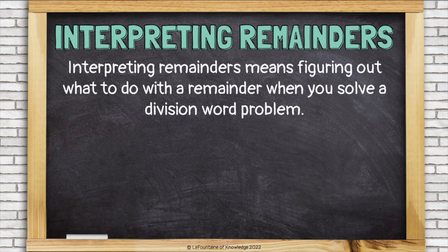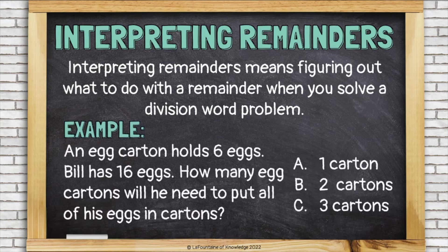Interpreting remainders means figuring out what to do with the remainder when you solve a division word problem. Here's an example. An egg carton holds 6 eggs. Bill has 16 eggs. How many egg cartons will he need to put all of his eggs in cartons?